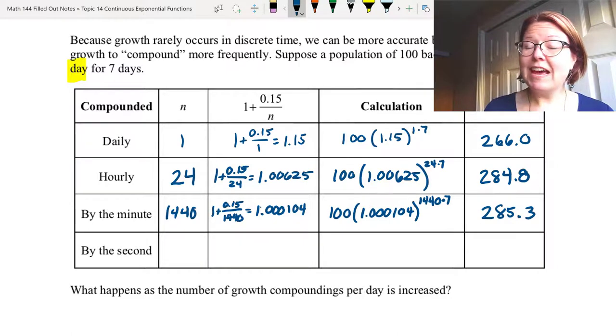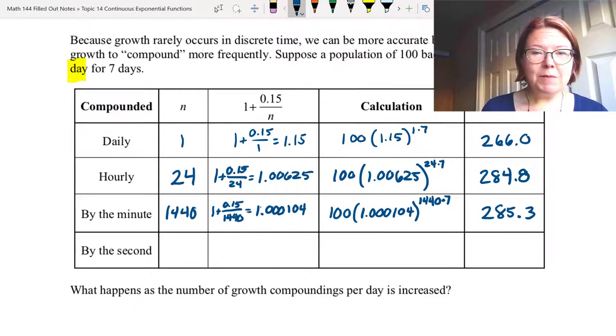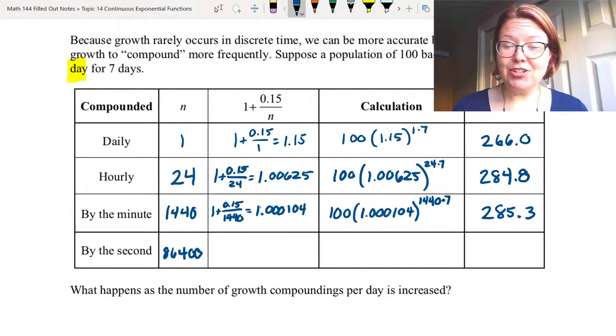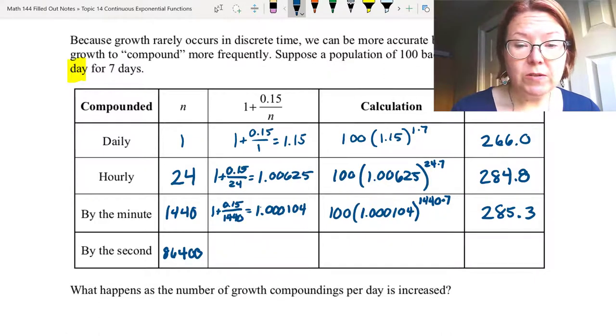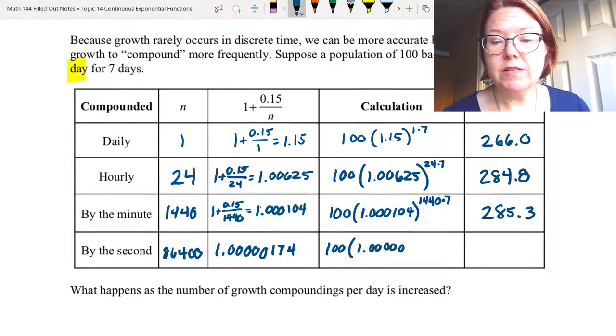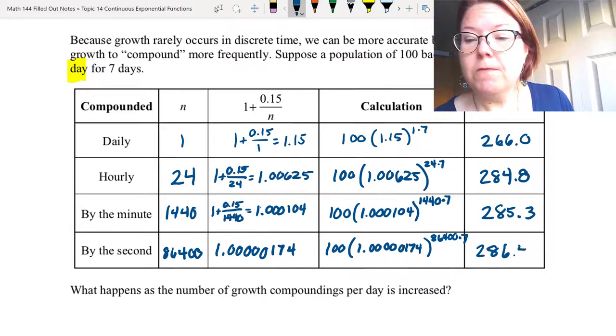I think this would be a good place to pause the video and have you all calculate what happens if we compound by the second. Okay, we're back. If we compound by the second, n is going to be the number of compoundings by the minute times 60, which is 86,400. The growth factor would be 1 + 0.15/86,400, which results in 1.0000174. Our calculation is 100 times (1.0000174), and then in the power, we have 86,400 times 7. The result is 286.4 bacteria.